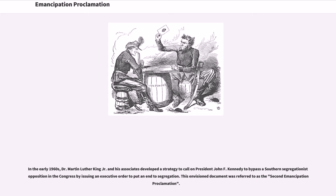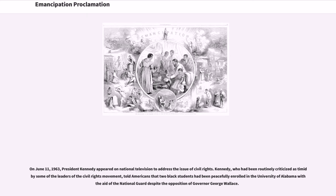In the early 1960s, Dr. Martin Luther King Jr. and his associates developed a strategy to call on President John F. Kennedy to bypass Southern segregationist opposition in the Congress by issuing an executive order to put an end to segregation. This envisioned document was referred to as the Second Emancipation Proclamation. On June 11, 1963, President Kennedy appeared on national television to address the issue of civil rights. Kennedy told Americans that two black students had been peacefully enrolled in the University of Alabama with the aid of the National Guard, despite the opposition of Governor George Wallace.